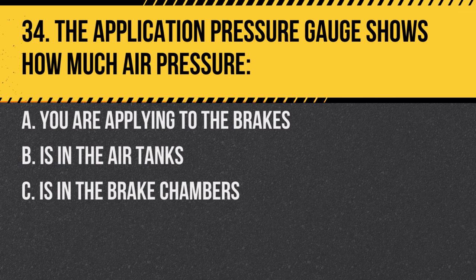Question 34. The application pressure gauge shows how much air pressure: A. You are applying to the brakes. B. Is in the air tanks. C. Is in the brake chambers. Answer A. You are applying to the brakes. It indicates the force of your brake application.